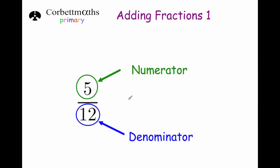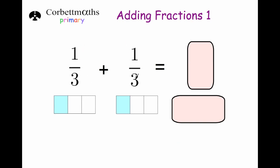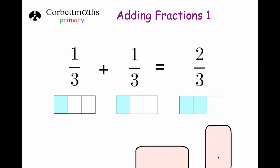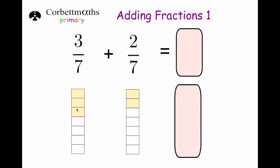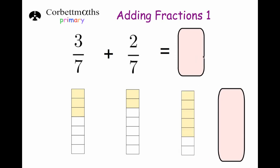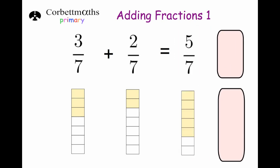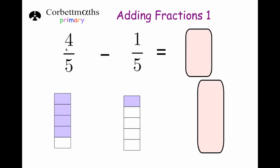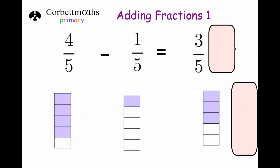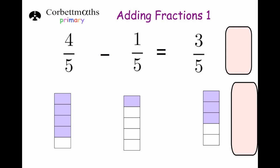Here's example one: one third plus one third. If I've got a third and I had another third, altogether I'm going to have two thirds. If I had three sevenths and I had another two sevenths, altogether I would have five sevenths. And for subtraction: if I had four fifths and I take away one fifth, I'm going to be left with three fifths.